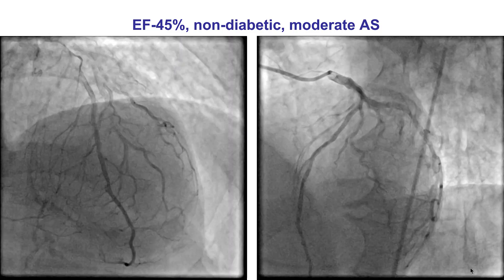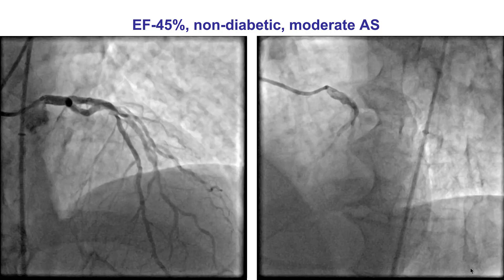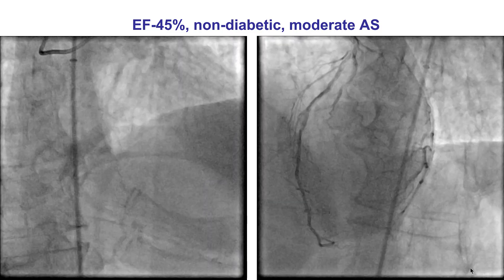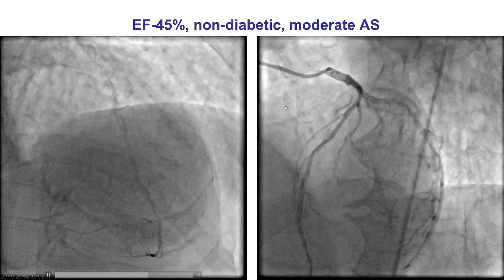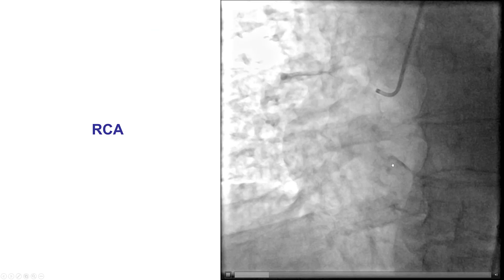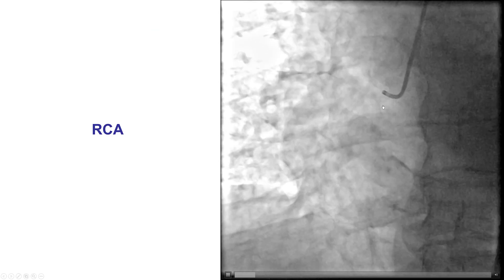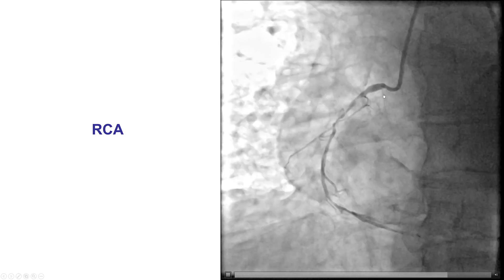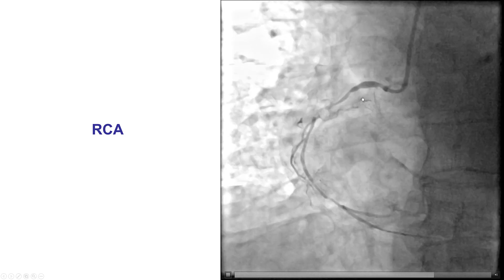The patient had low ejection fraction and presented with heart failure. He did have moderate aortic stenosis and was referred for coronary angiography. Coronary angiography demonstrated an eccentric lesion in the mid-LAD, and there was also severe disease in the right coronary artery with significant ostial stenosis. There was actually pressure dampening, as well as a severe 90% mid-lesion in a vessel that had significant calcification.